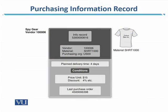In this diagram, if you note the purchasing information record, you can see what kind of information is available. If we are talking about a shirt, then the information record is identified by an ID — in this case, 530000816. The vendor ID is also available, along with the material master identifying the item the company already knows they procure or sell. After that, the purchasing organization that has requested the material from the vendor is shown, followed by planned delivery time, conditions, pricing unit at $15, discount amount, and finally the last purchase order that was raised. All of this information combined forms a purchasing information record.